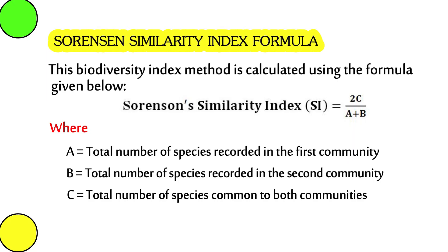The formula of the Sorensen Similarity Index is: SI = 2C divided by (A + B), where A is the total number of species recorded in the first community, B is the total number of species recorded in the second community, and C is the total number of species common to both communities.